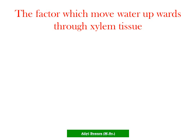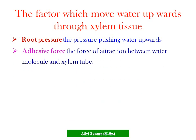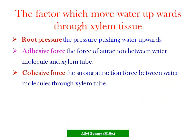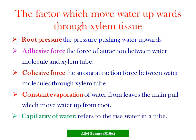The factors which move water upwards through the xylem tissue are: root pressure, which is the pressure pushing water upwards; adhesive force, which is the force of attraction between water molecules and the xylem tube; constant evaporation of water from the leaves, which is the main pull — the transpiration pull — moving water upwards from the roots; and capillarity of water, which refers to the rise of water in a tube.